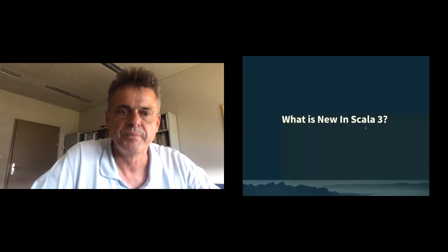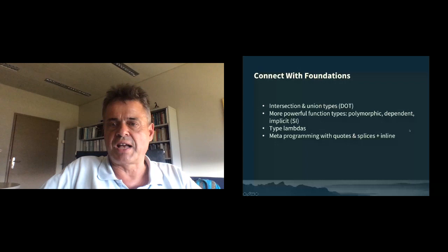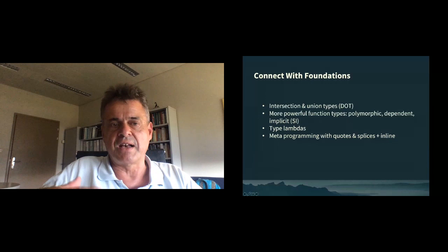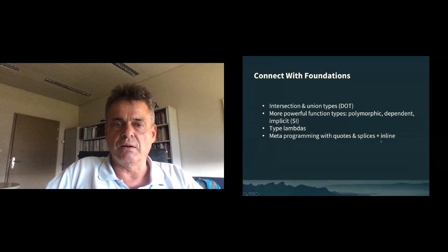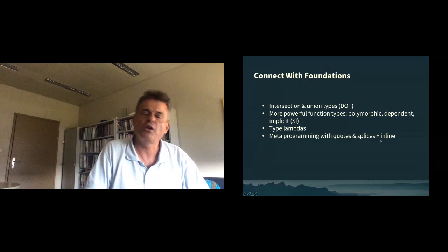Then we have more powerful function types: polymorphic function types, dependent function types, and implicit function types, which come from our work on SI, type lambdas, and metaprogramming with quotes and splices. These are heavy-duty, very foundational things that are now much better connected to the underlying theory. The other motto was to simplify life as a programmer, and there are a lot of small simplifications that together make a big difference.